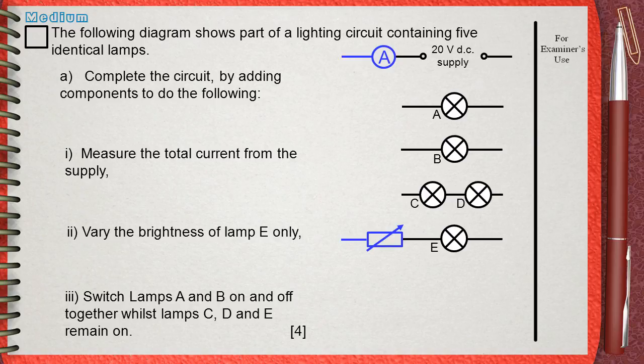Since A and B are in parallel, and we want to control them together, we must connect them together first with one switch. This will control them together.